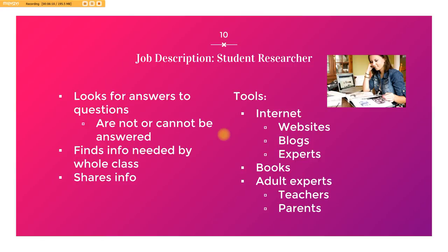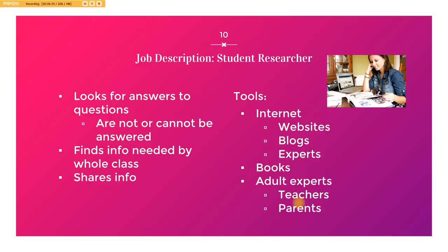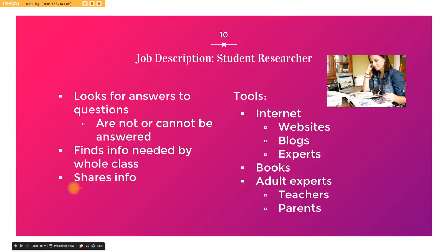The last job is the student researcher. Your job is to make sure that if there's a question I can't answer, or someone in the class has a question that needs to be answered, that information is found. You may need to look on the internet, check websites, blogs, find experts, or talk to other teachers — maybe it's a social studies question, or maybe we're looking for more information on coordinate planes and I couldn't get an answer. You could talk with math or science teachers, family members, parents, or check out books at the library. Your job is to find this information for the class, not just for yourself, and make sure it's shared.